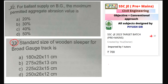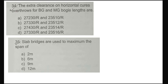Correct option will be option number B — 275 into 25 into 13. For ballast supply on the BG, the maximum permitted aggregate abrasion value — it will be option number B. Impact value answer: 20%, abrasion value is 30%. So Question 32 is B, Question 33 is B. Question 34: the extra clearance on horizontal curve overthrow for BG and MG bogey length — option number D will be correct.